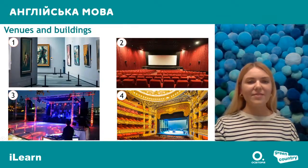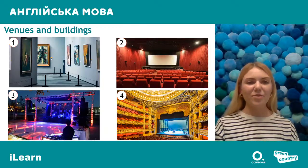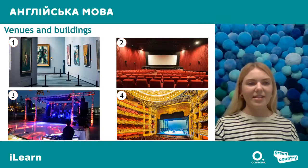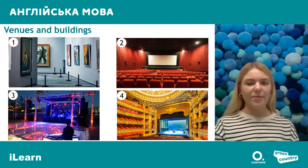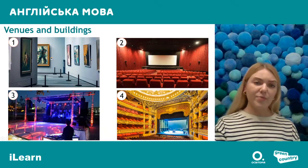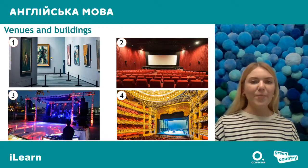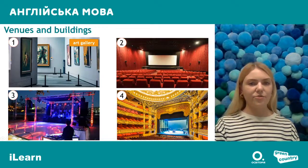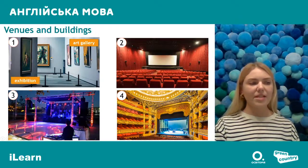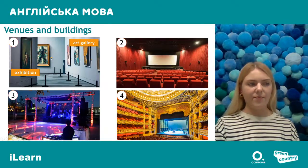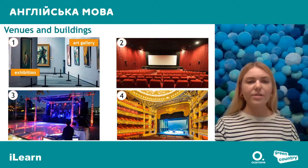Let's look at the first picture — what is the name of this place? It is connected to art because you can see different paintings. When we speak about paintings, we usually say 'gallery' — an art gallery. In galleries or museums, we can have exhibitions (виставки) — exhibition of paintings, exhibition of photos, exhibition of sculptures.